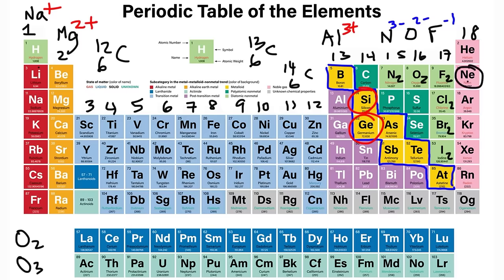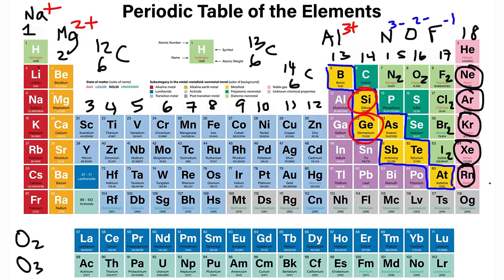We have neon — think of neon lights. Argon is found in the air. Krypton — think of Superman's kryptonite. Then xenon and radon. Radon is interesting because it can form from the decomposition of uranium, thorium, or radium. Being a gas, it can come from the ground up into your house. If your home doesn't have good ventilation, radon can build up — it is a radioactive gas hazardous to your health, so it's good to open your windows.